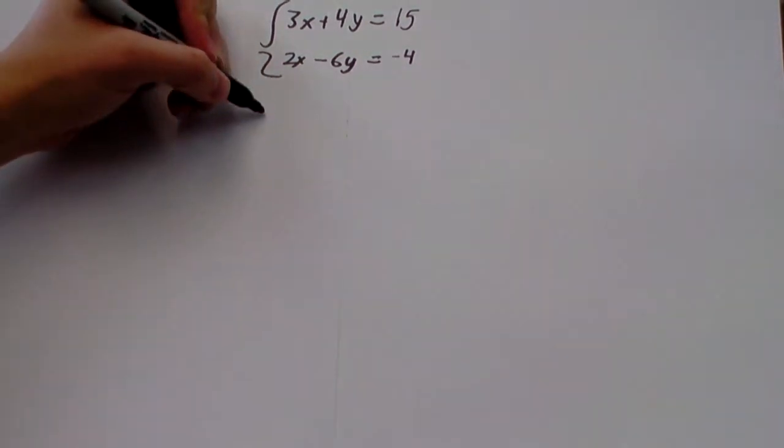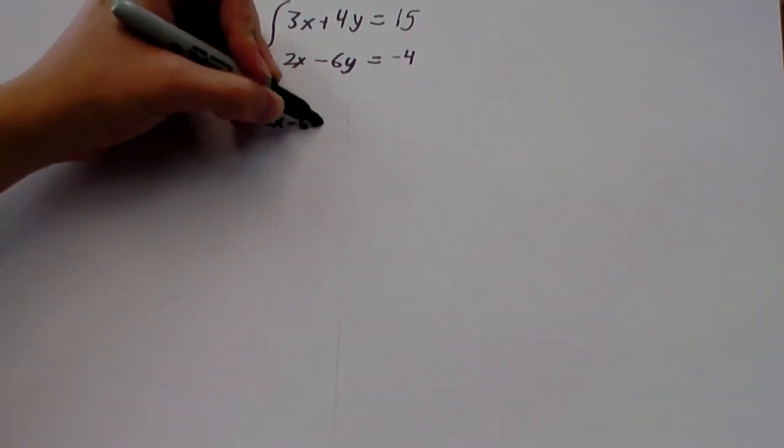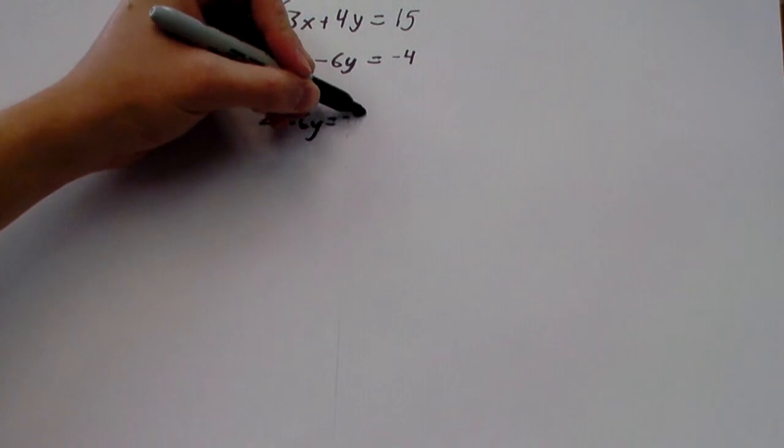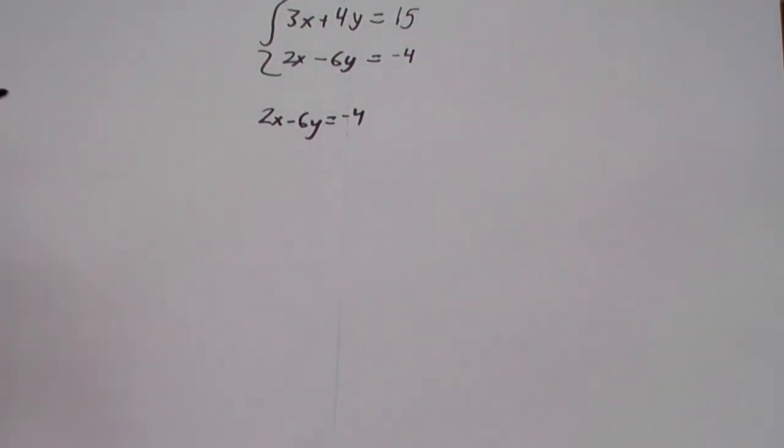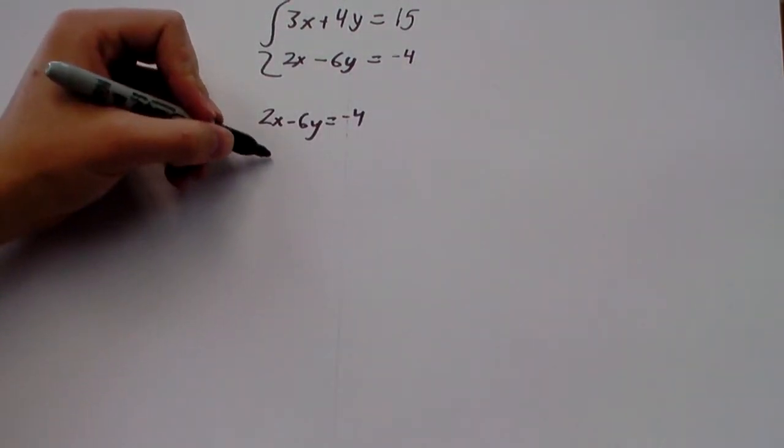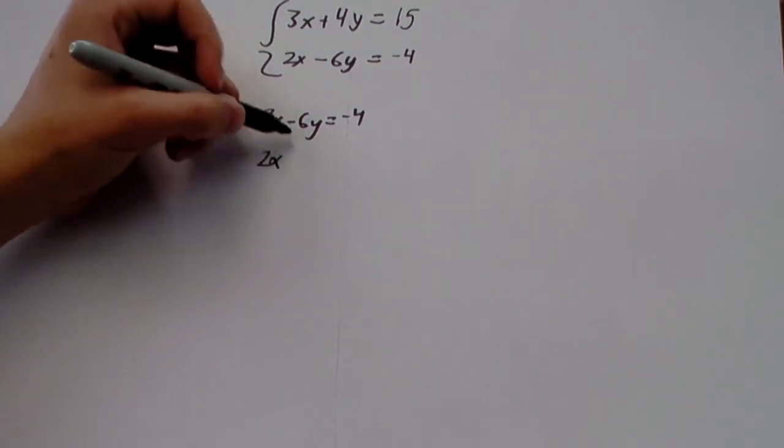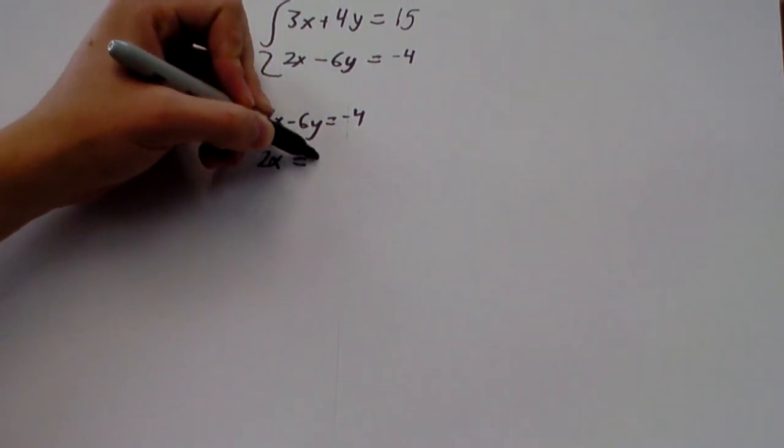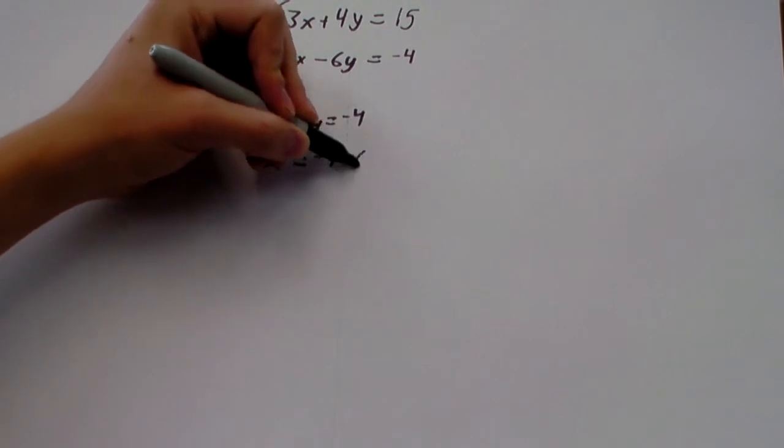Let's take 2x minus 6y equals negative 4, and let's isolate the x. So, we're going to add 6y. We get 2x minus 6y plus 6y equals negative 4 plus 6y.